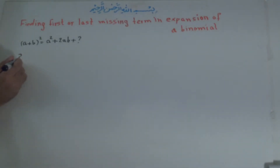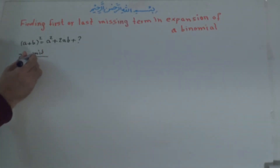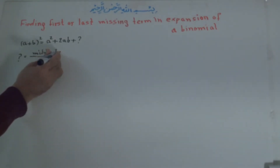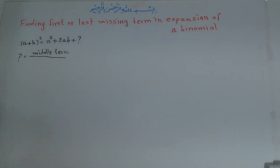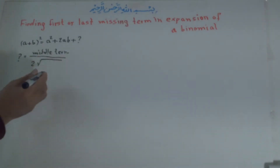The missing term, or the question mark, is equal to the middle term divided by 2 times the square root of the known term.